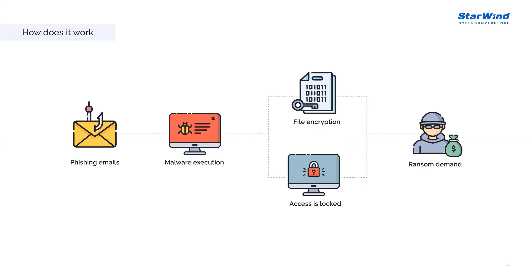Step two is data encryption. Once the ransomware gains access to a system, it initiates the process of encrypting files. Encryption is a built-in functionality of operating systems and involves accessing files, encrypting them using an attacker-controlled key, and replacing the original files with the encrypted copies.